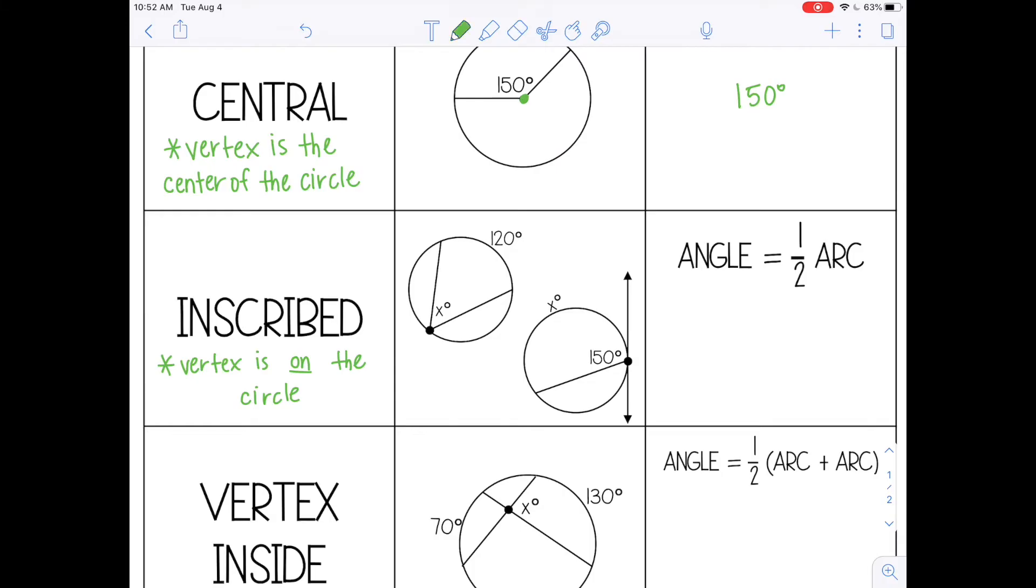the angle is x. The arc is 120, so it's going to be half of 120, which is the same thing as 120 divided by 2. So my angle would be 60 degrees.